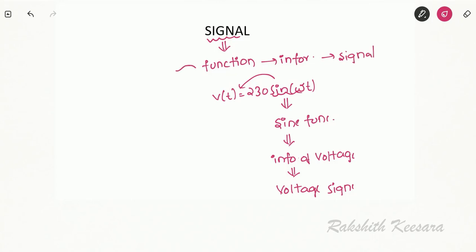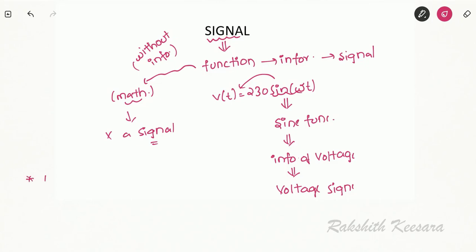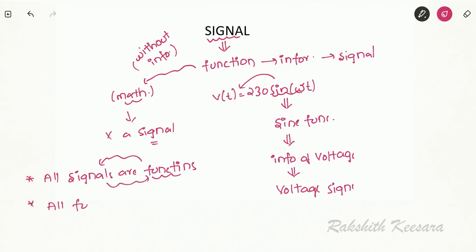A function without any information, simply used for mathematical purposes to analyze mathematically without any information — that function is not a signal. So I can make two statements: first, all signals are functions, because any function with some information is a signal. But all functions are not signals, because any function without information is not a signal.